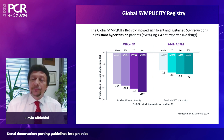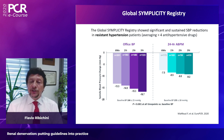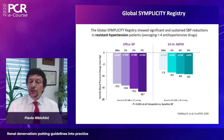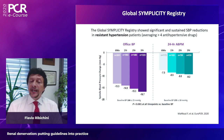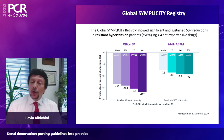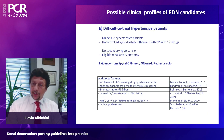The Global Symplicity Registry is a large international study treating patients with resistant hypertension on an average of more than four antihypertensive drugs. Studies have shown dramatic reductions in both office and ambulatory blood pressure measurements at three-year follow-up.